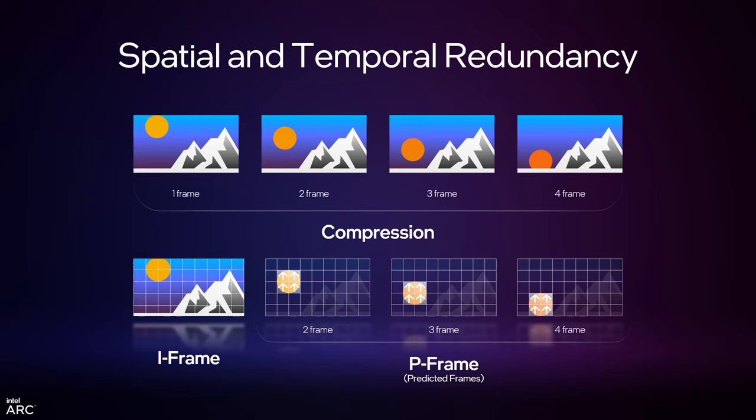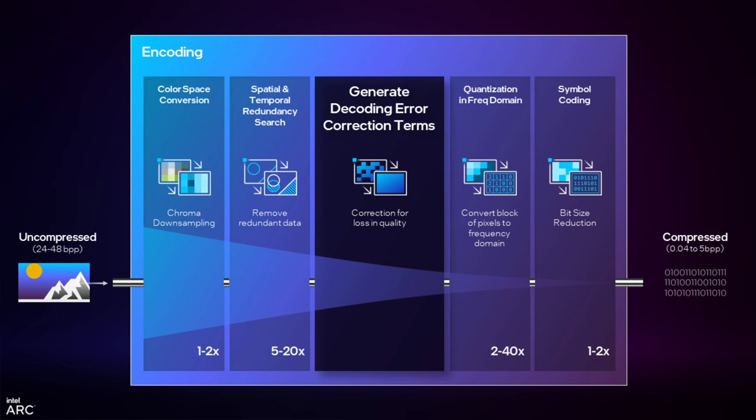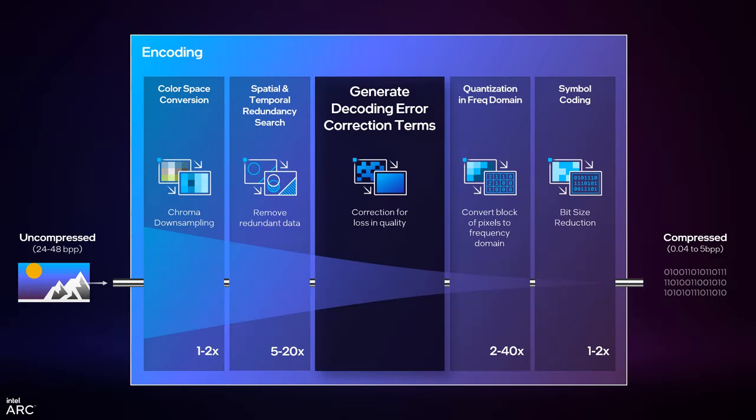We call these I-frames and P-frames. I-frames occasionally store all the pixels; then a bunch of P-frames follow to do predictions. The predicted frame isn't perfect — you're just doing an estimate — so we take that predicted frame and subtract it from the original frame. What's left is called a residual, which is all the errors remaining after prediction. The next step is generating decoding error-correction terms from that residual, and we can actually compress those residuals further.